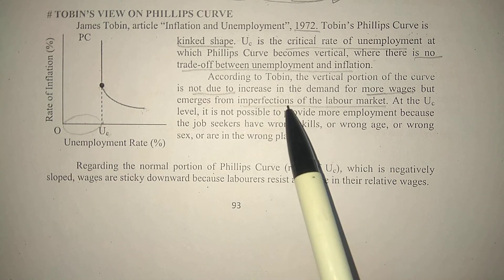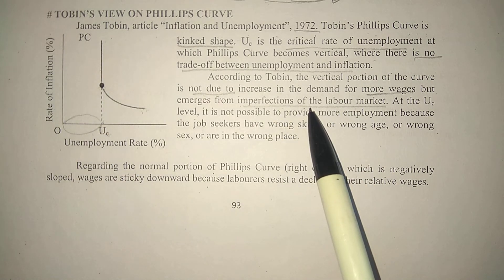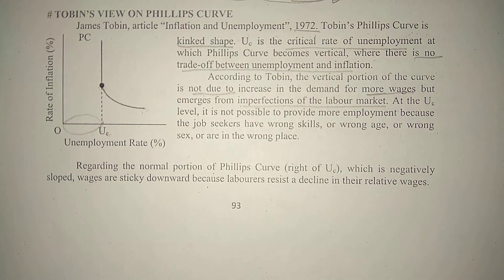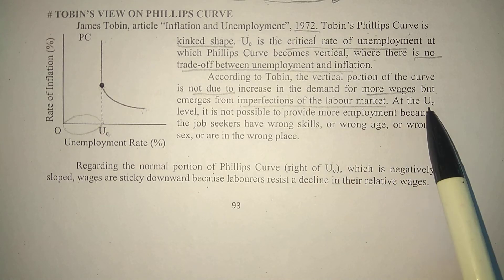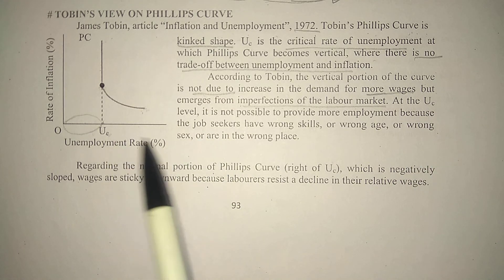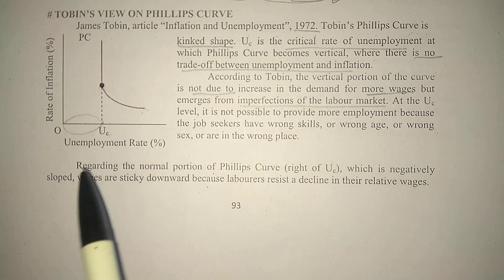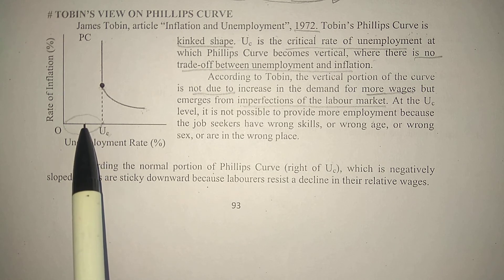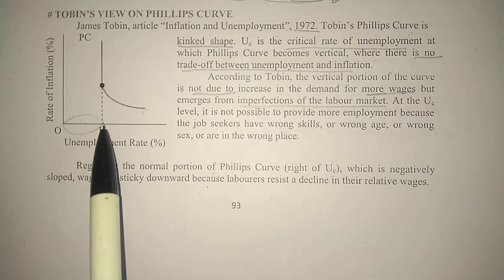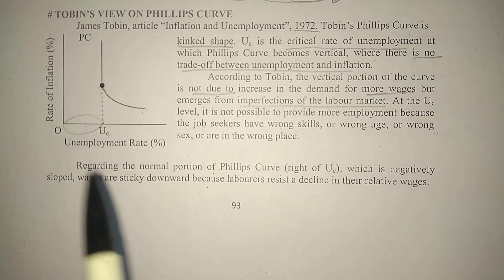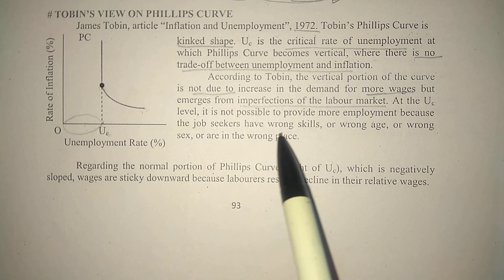According to Tobin, why will this unemployment always remain? Because of labor market imperfections. Labor market imperfection means there are certain problems in the labor market due to which the demand for labor cannot match the entire supply of labor. It is not possible to reduce unemployment further because the job seekers have wrong skills.